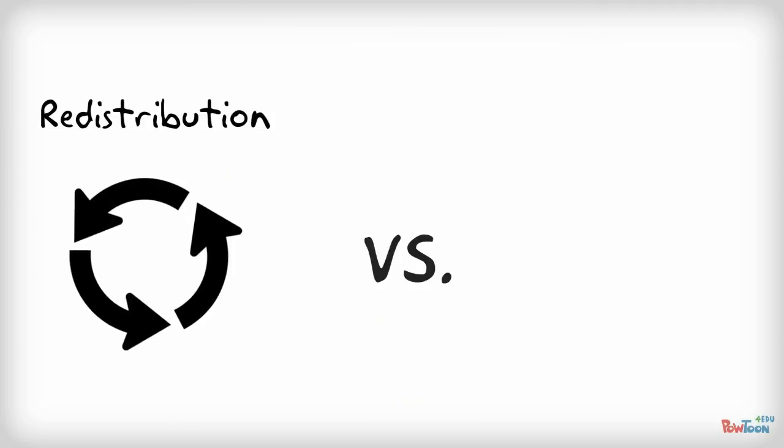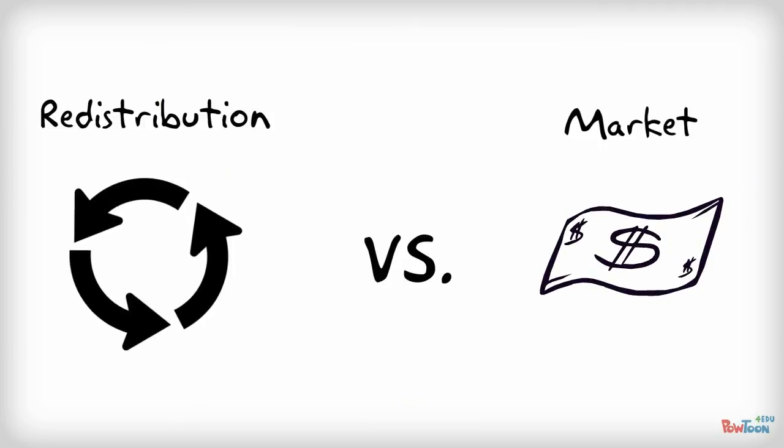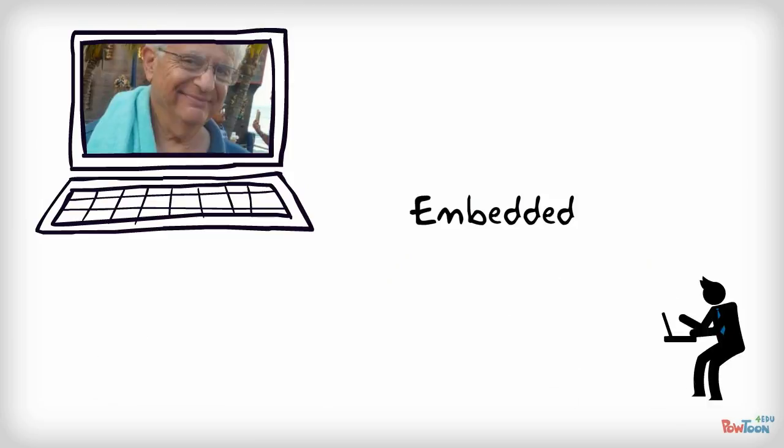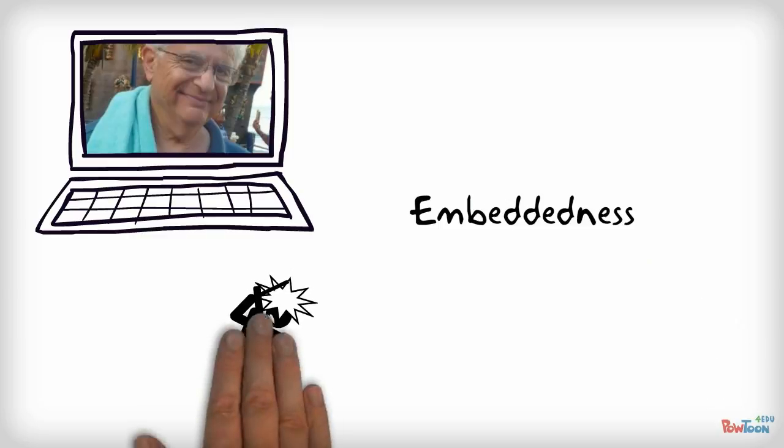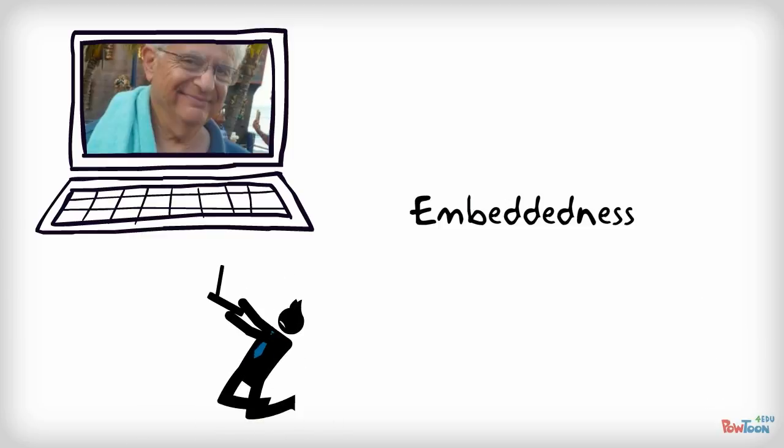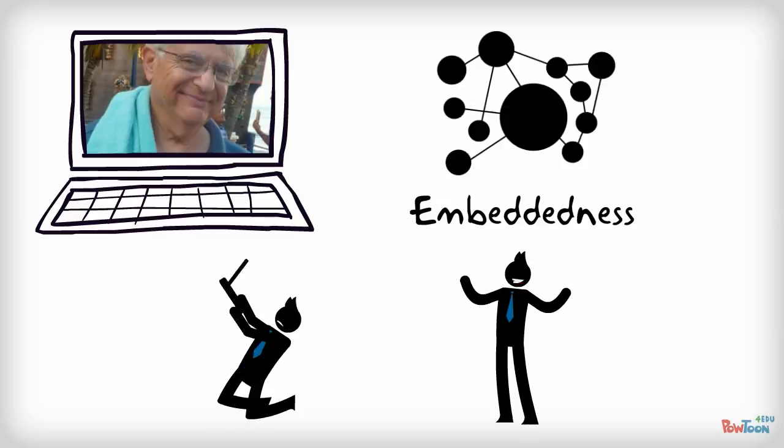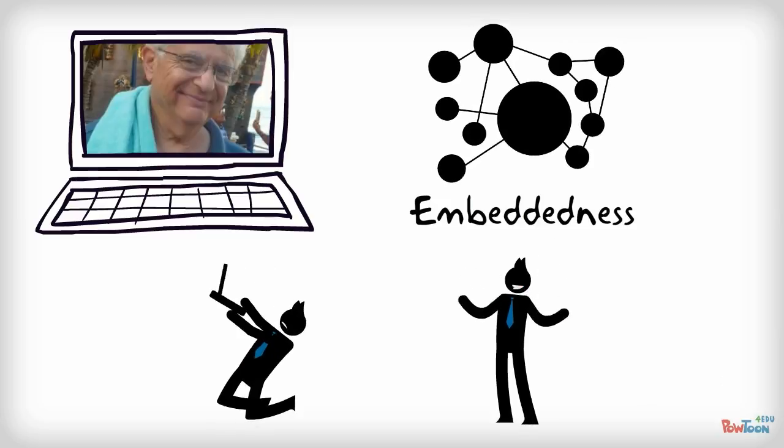Economies that were more driven by redistribution of resources than open exchange on a marketplace. In the 1970s, Mark Granovetter resurrected and hijacked the term embeddedness to describe both the problems and opportunities that being embedded in a social network can bring.